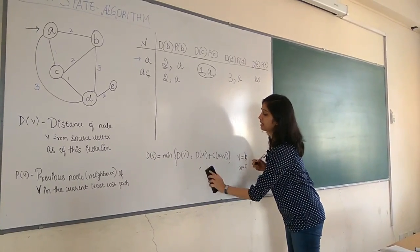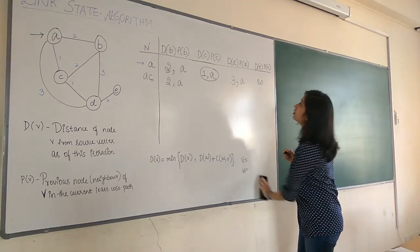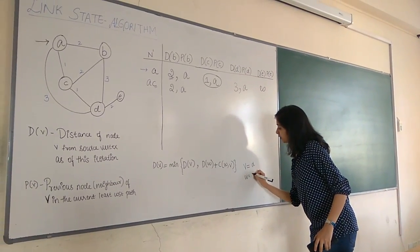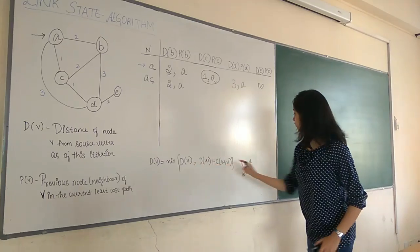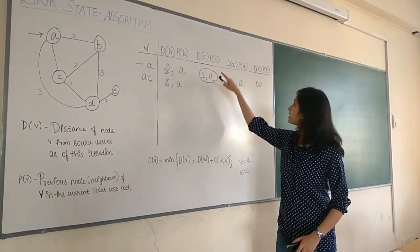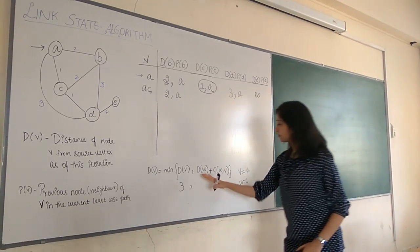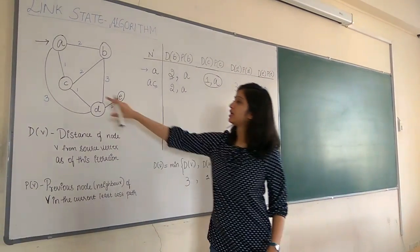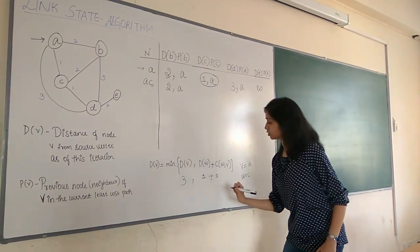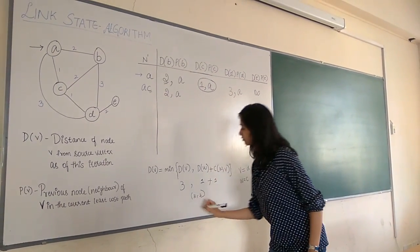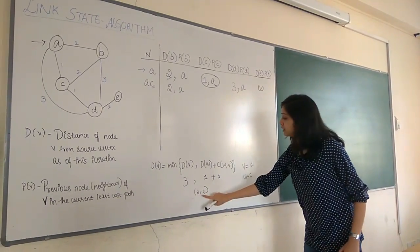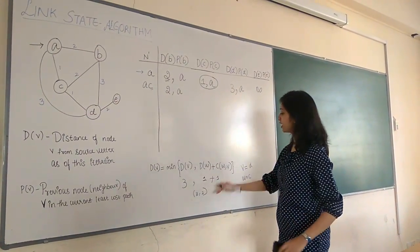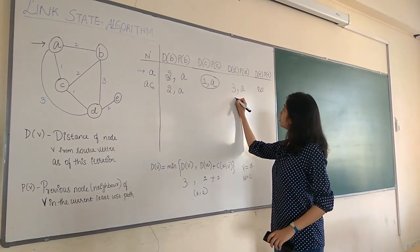Now we repeat for the other vertices. The next vertex is D. V is D and W is C. D(V), the distance of D, is 3. D(W) is 1, plus the distance between C and D, which is 1. So minimum of 3 and 2 is 2. This gives us 2 comma C — we are going to D via C, so the previous node changes to C. Now for E: D(E) is infinity. There is no direct link from C to E, so D(W) plus cost is also infinity. Minimum stays infinity.